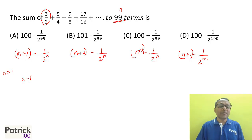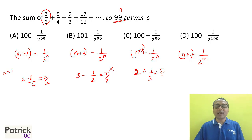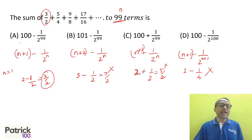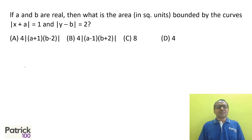Putting n = 1 into option A: (2−1)/2 = 1/2 — doesn't give 3/2. Option B gives (3−1)/2 = 1 — doesn't satisfy. Option C gives (1+1)/2^1 = 2/2 = 1 — doesn't satisfy. Option D gives (2−1)/2^2 = 1/4 — doesn't satisfy. Going back: the only option that gives 3/2 when n = 1 is option A. Confirm by putting n = 2 as well if needed.